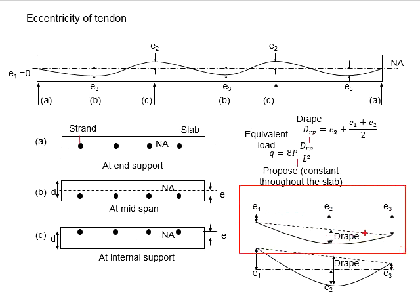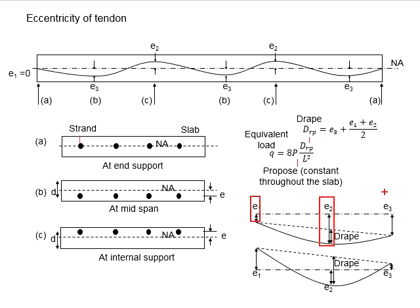Taking this as an example, if all three eccentricities are below the neutral axis, the drape here will represent the distance from the largest curvature to the imaginary line that joins the first eccentricity and the end eccentricity here.